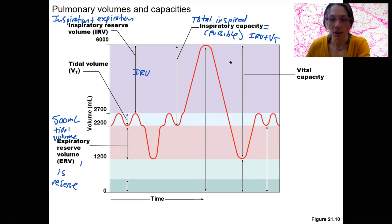The total amount you can inspire and expire is your vital capacity, vital like alive. This is going to be your IRV plus tidal volume plus ERV, yeah? This whole piece right here.